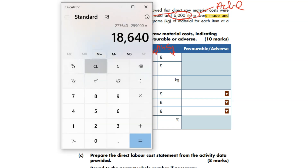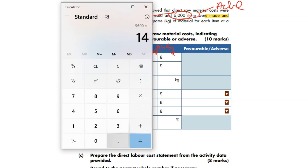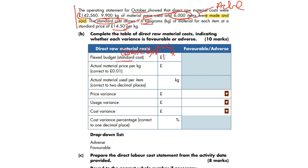9,600 kg × £14.50 = £139,200 — that's the standard cost. But actually, more kg were used — that's not good. Actual material price per kg: 142,560 ÷ 9,900 = £14.40. Actual material used per item: 9,900 kg for 6,000 units = 1.65 kg per unit — 0.05 kg more than standard, which will be adverse.